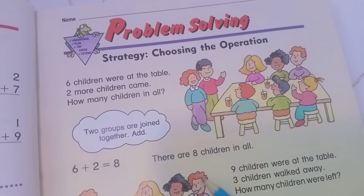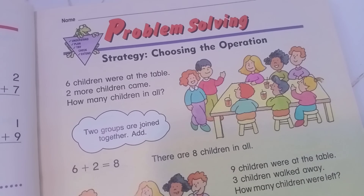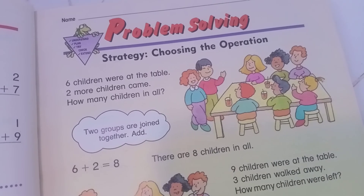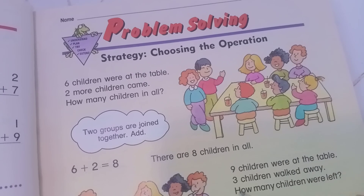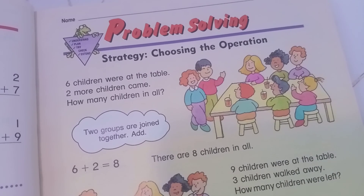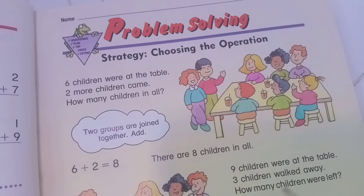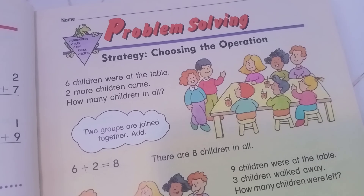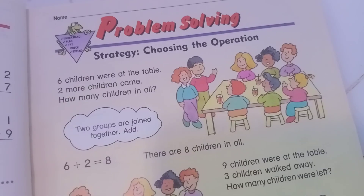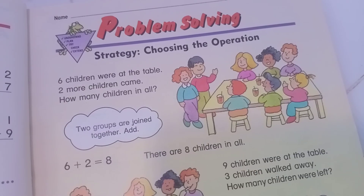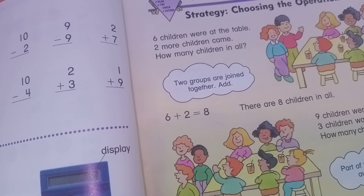Now you can see — one, two, three, four, five, six, seven, eight, nine — yes, nine children. Three children walk away. How many children are left? A part of the group is taken away — subtraction.